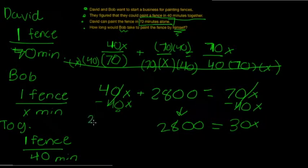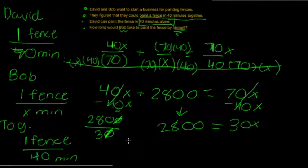Now, on the side, let's solve 2800 divided by 30. First, we can cancel out the zeros. And using a calculator, we can figure out that 280 divided by 3 equals 93.3 repeating.